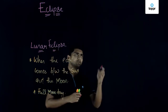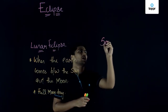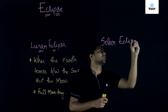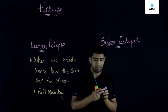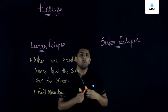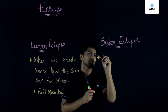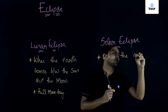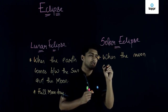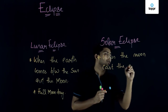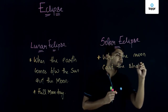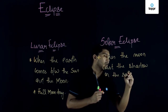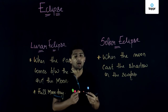The next one is the solar eclipse. When the moon casts a shadow on the surface of the earth, we can say that it forms a solar eclipse.